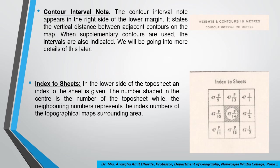The contour interval is given in the lower margin — in our case it appears in the center just below the scale — and it states the vertical distance between contour lines. Contours are lines joining points with equal height or equal elevation values. The index to the topo sheet is also provided: the shaded number in the center is the number of the toposheet we are looking at, while the neighboring numbers represent index numbers of the surrounding topographical maps.